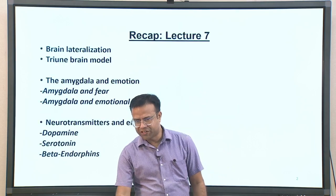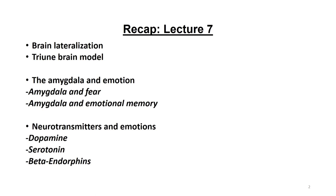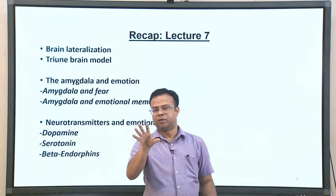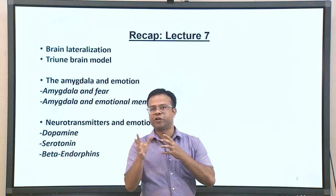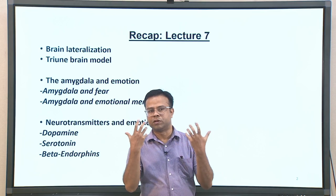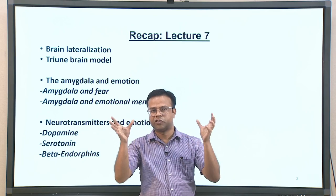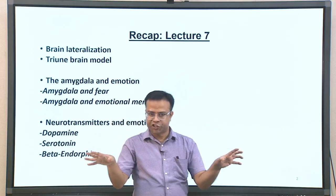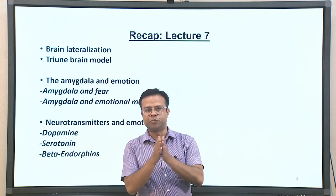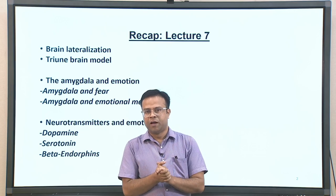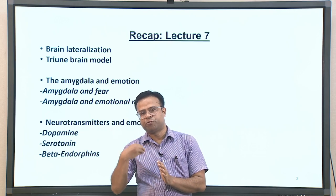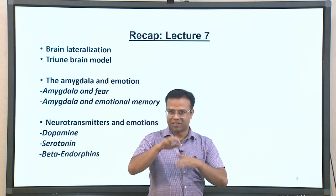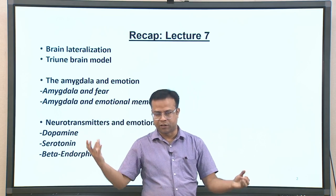Before we talk about today's lecture, let me give a brief recap of the last lecture. Last lecture was about the physiology of emotion. In lecture seven, we talked about how emotion is connected to physiological changes in the brain. In that context, we discussed the concept of brain lateralization, which basically means that the human brain is divided into right brain and left brain, and the right brain was found to be primarily associated with emotional experiences.